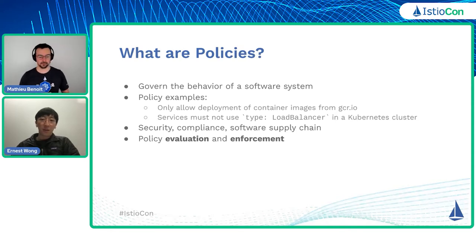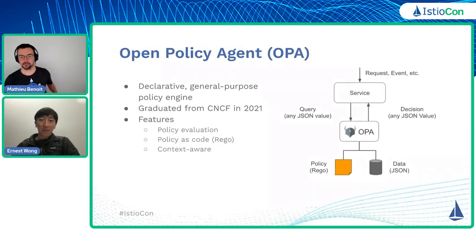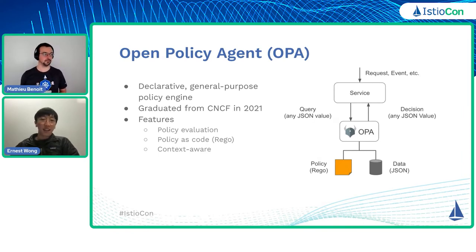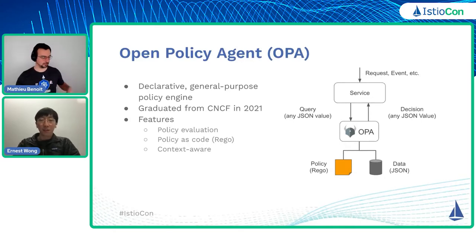Without policy, your software system can turn into a wild west. There are two essential areas to a proper policy management system: policy evaluation and enforcement. We need a common interface for administrators to write and deploy policies, as well as a unified way to enforce them in a scalable fashion. Luckily, there are tons of great solutions out there. In this slide, I'm going to talk about the CNCF Open Policy Agent project as well as the Gatekeeper project, showing you how you can leverage them to secure your Istio Service Mesh purely based on policies.